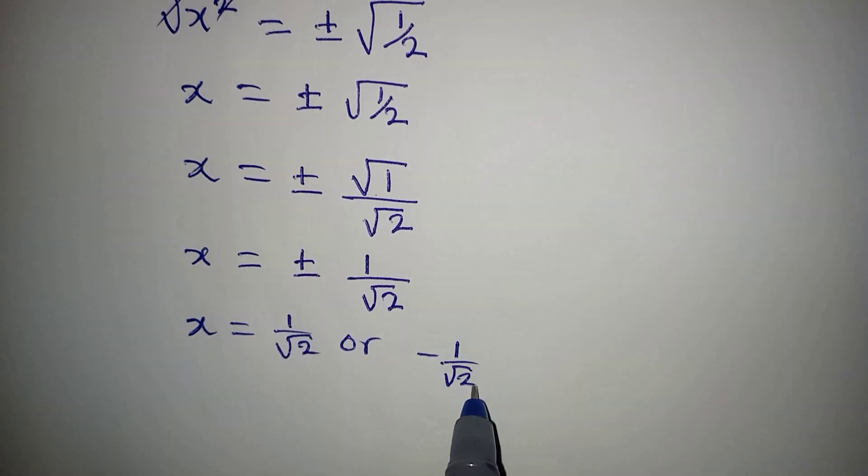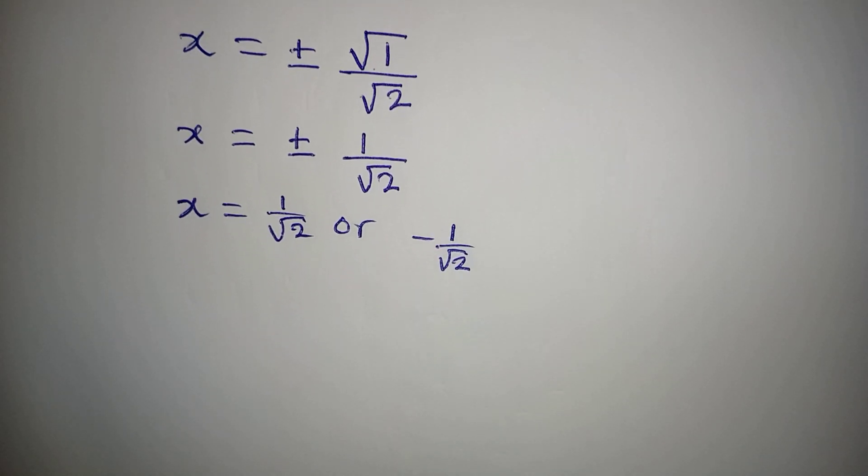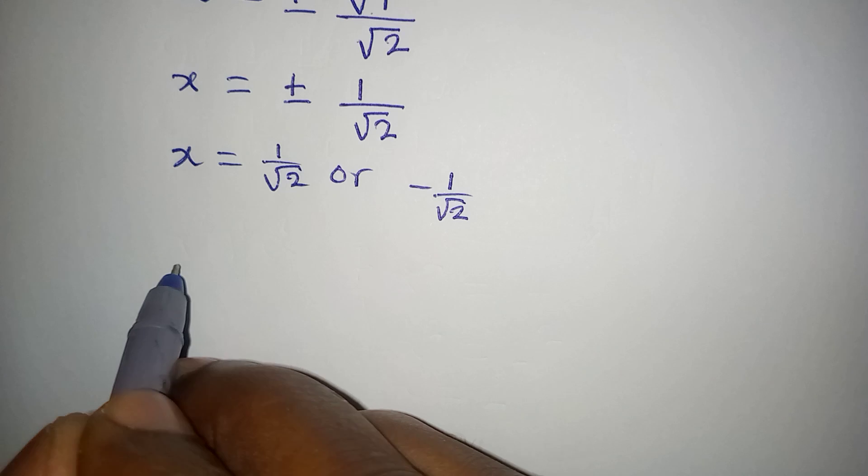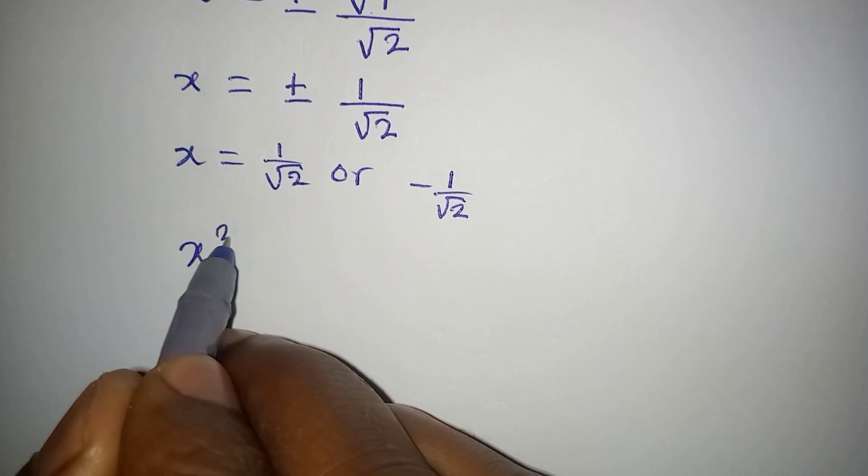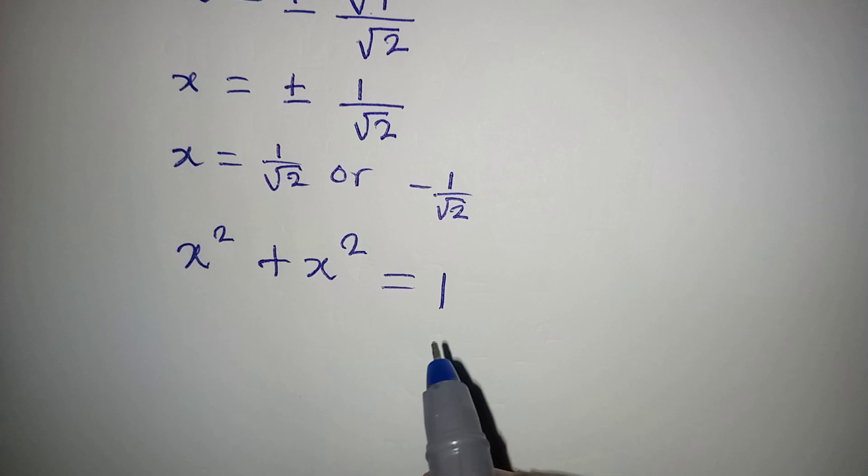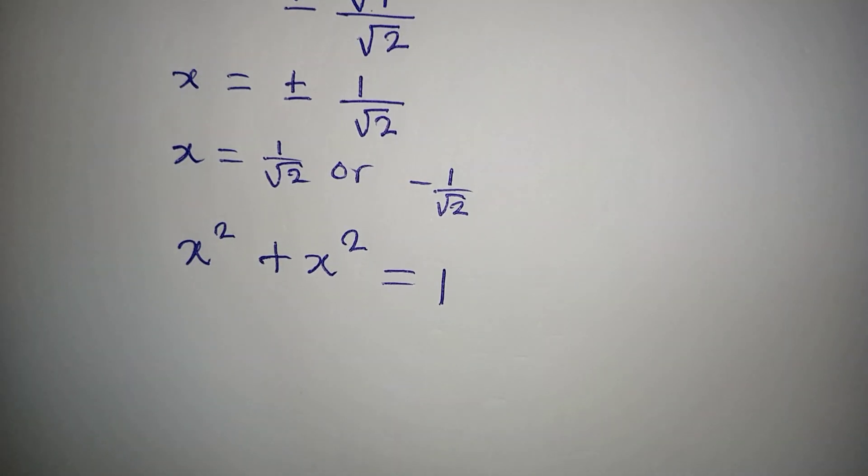But then I want us to check whether this would satisfy the equation. The original equation is x squared plus x squared equals 1. If I put in the first value of x, what do I have?